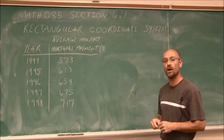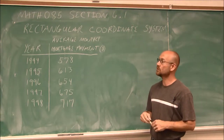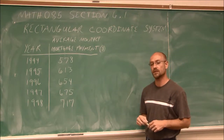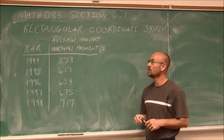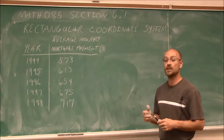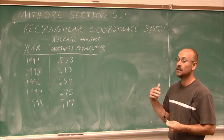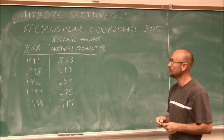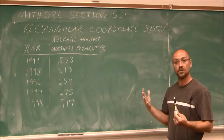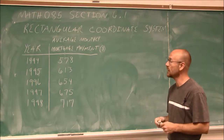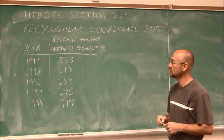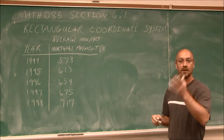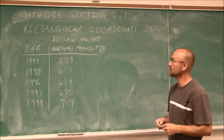This is section 6.1. We're going to introduce the rectangular coordinate system, also known as the Cartesian coordinate system, which was named after the person who came up with it, Rene Descartes, a French mathematician from a few hundred years ago.